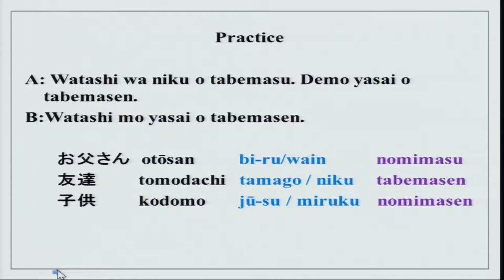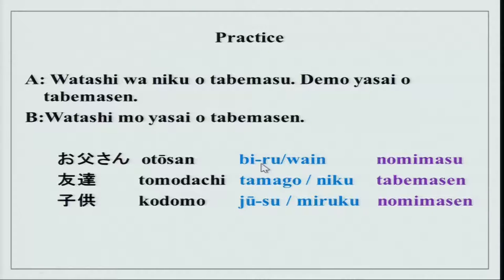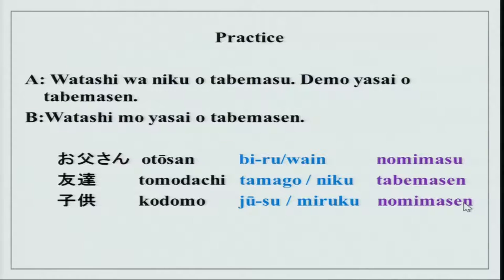Watashi wa niku wo tabemasu demo yasai wo tabemasen. Watashi mo yasai wo tabemasen. For watashi you can replace with any subject, and for niku and yasai you can replace with biru, wine, tamago, juice, miruku — you can see these all belong to a certain set, beverages or food, and accordingly you will use the verb in these sentences.